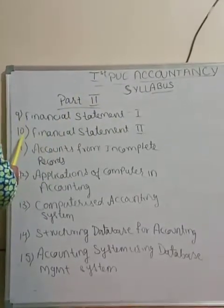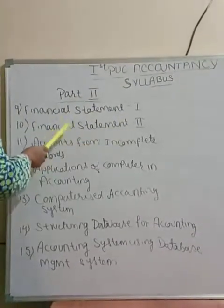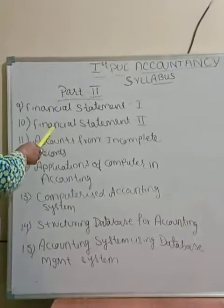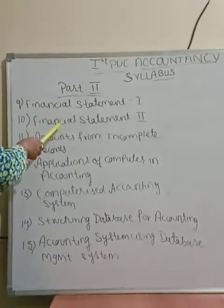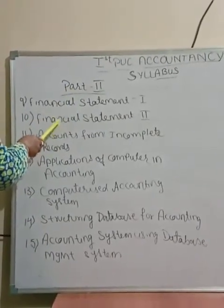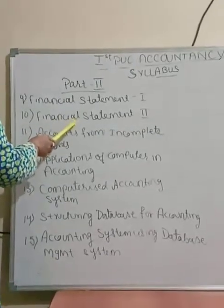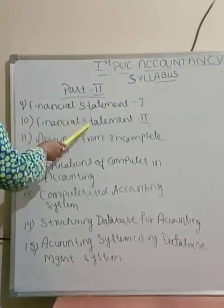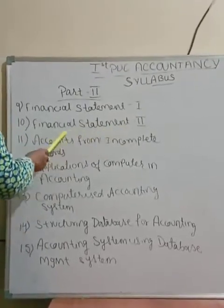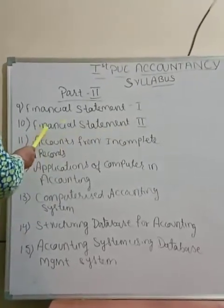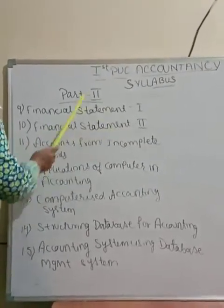Chapter 10 is Financial Statement Part 2. This chapter is a continuity of Part 1. Here we are going to prepare a trading account, profit and loss account, and balance sheet with adjustments, in order to provide information to the stakeholders.